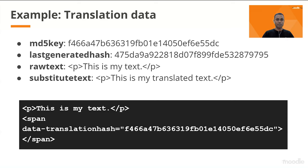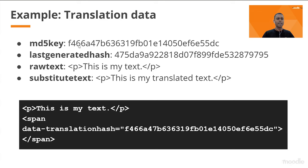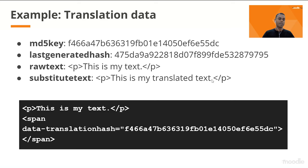Once the filter has all these things, it checks the translation data — is there anything in the cache or database? The translation record stores the MD5 key as the main identifier, the last generated hash (hash of the raw text), the raw text, and the substitute text (the translated data). When a user needing translated content comes to the page, the plugin checks: for this MD5 key, is there a matching record? If yes, it displays the substitute text instead of the original. That's essentially what the filter does — find a matching record and display the substitute text, which is the translation.